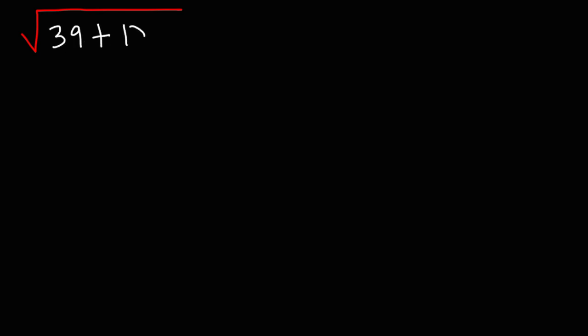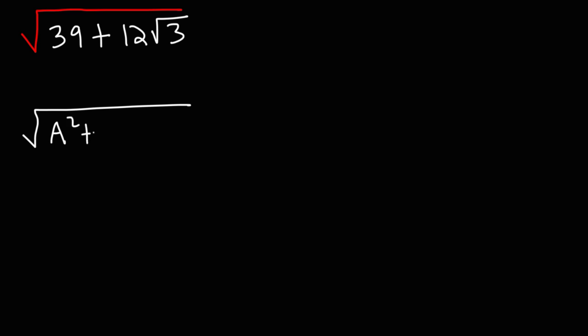Now let's work on one final problem. This is going to be the square root of 39 plus 12 times the square root of 3. Go ahead and pause the video and work on this problem. This time we have a plus symbol instead of a minus symbol. So we're going to use the formula a squared plus b squared plus 2ab. Let's assume that b is equal to the square root of 3.